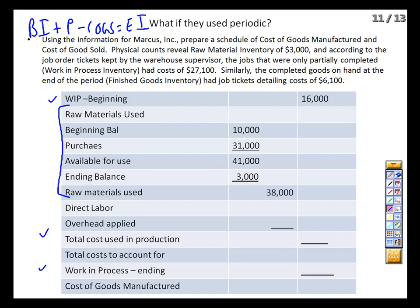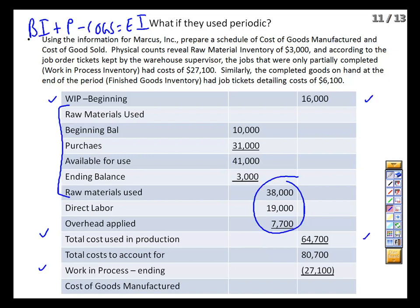We used $38,000 of raw materials in production. We had labor costs of $19,000 — our HR folks handle payroll and told us that number. And overhead was still $7,700 because we're keeping track of machine hours on job tickets. So we know how much total cost went into production across these three items, totaling $64,700. Between what we started with and what we added to work in process, we have $80,700 of work in process flowing through the system during the month. We count at the end of the month and see $27,100 of inventory on hand — which means we completed inventory costing $53,600, and that's the cost of goods manufactured.